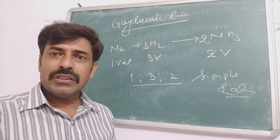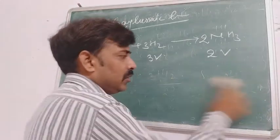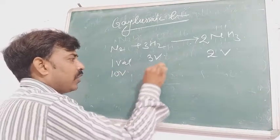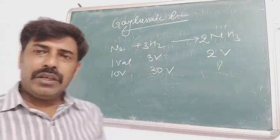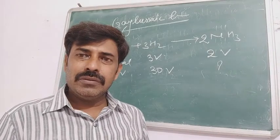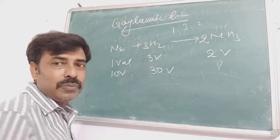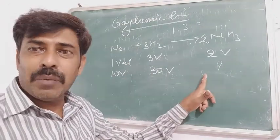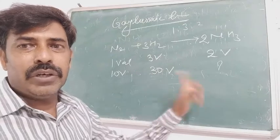The questions on this topic are straightforward. If 10 volumes of nitrogen react with 30 volumes of hydrogen, what will be the volume of ammonia? Generally, algebraically you might think 10 + 30 = 40, so ammonia is 40 liters. But the ratio 1:3:2 tells us that one volume of nitrogen reacts with 3 volumes of hydrogen to yield 2 volumes of ammonia. So 10 volumes of nitrogen will react with 30 volumes of hydrogen to yield 20 volumes of ammonia.